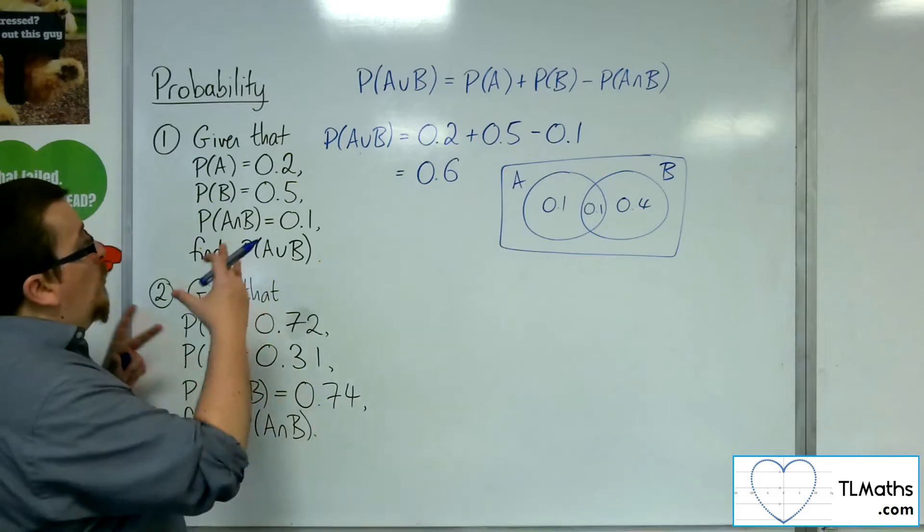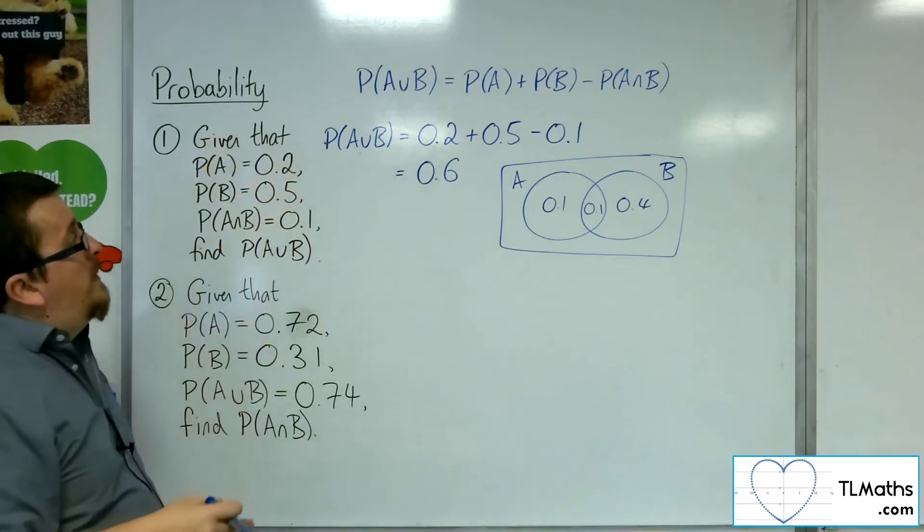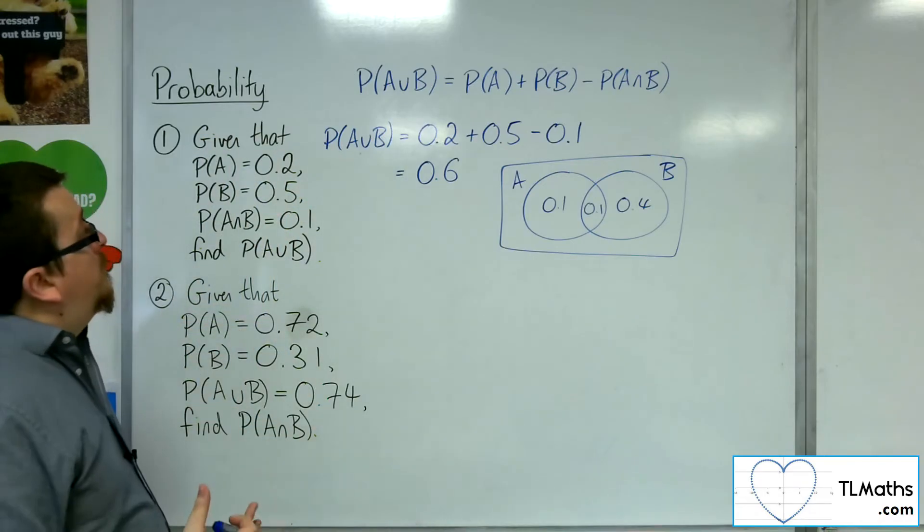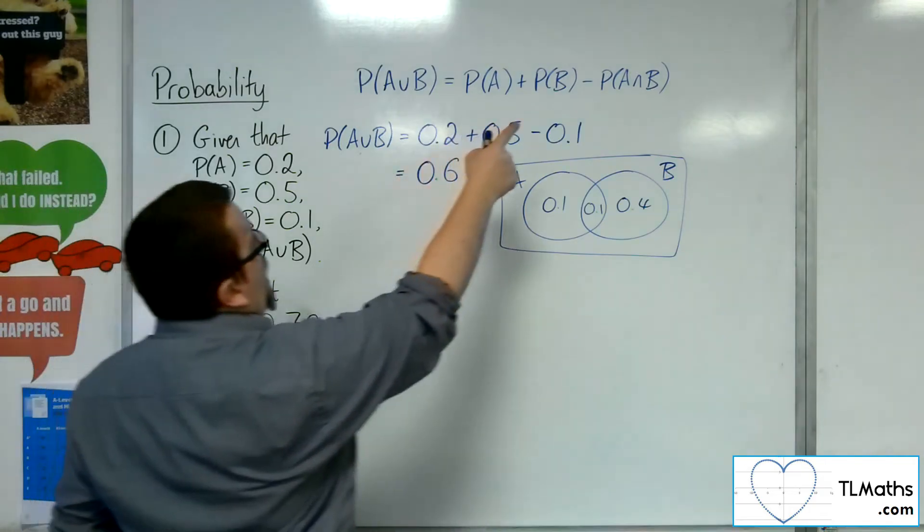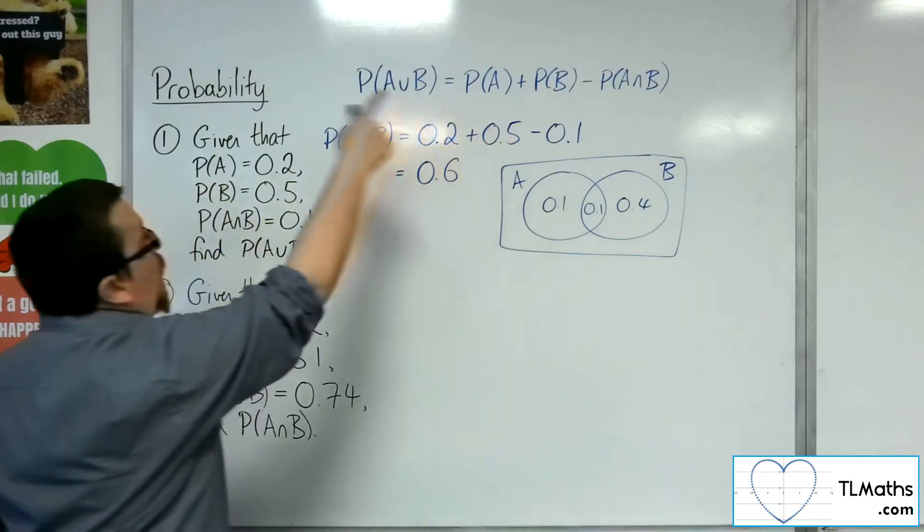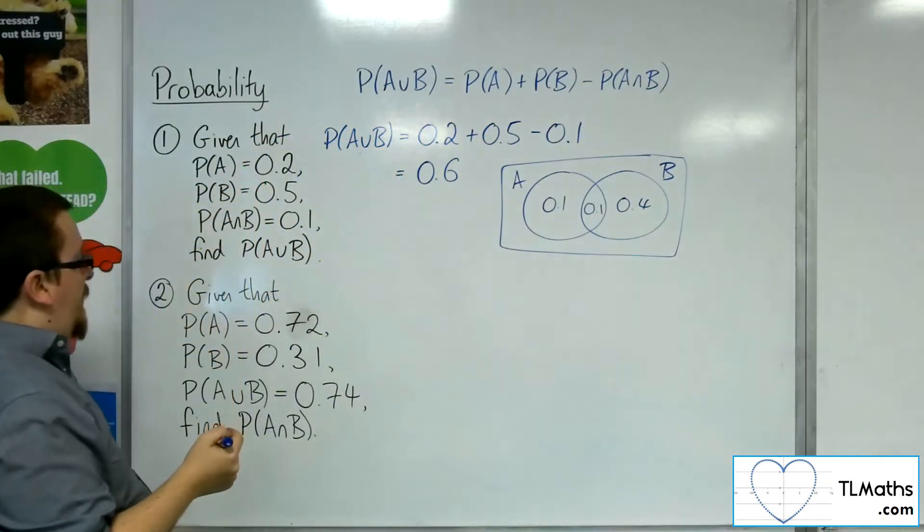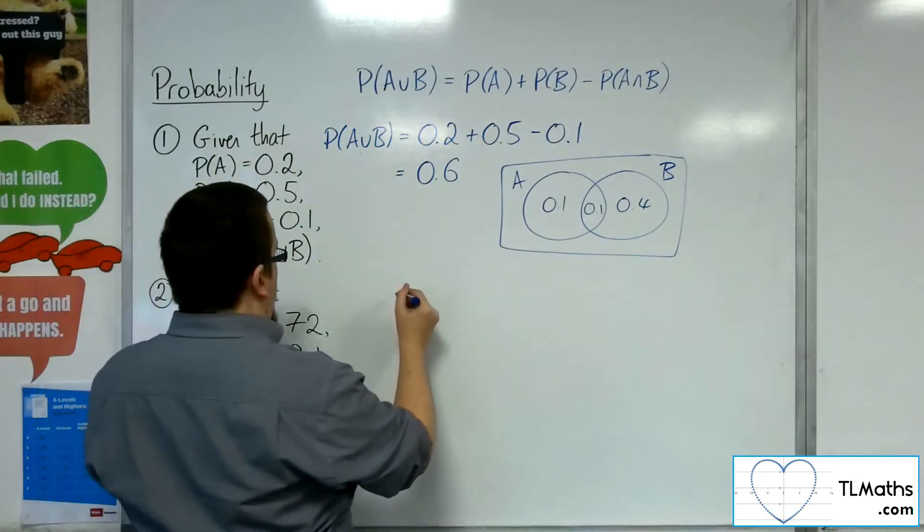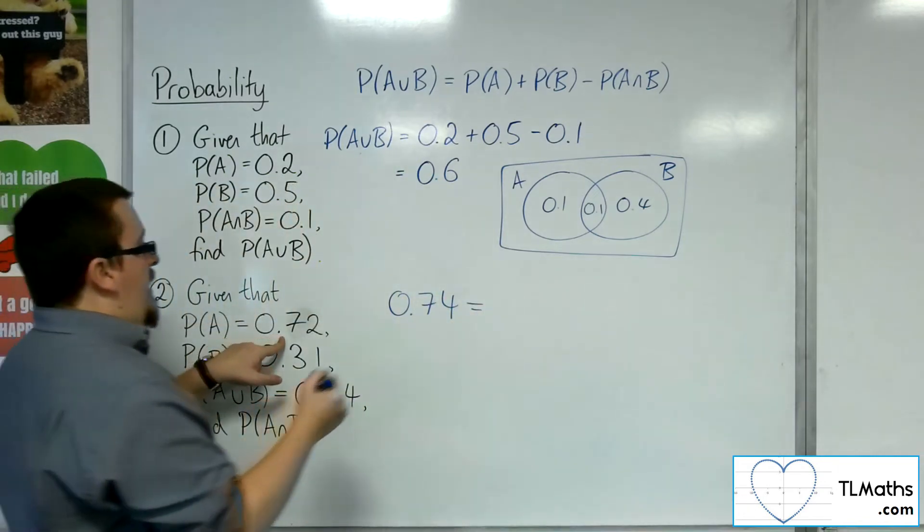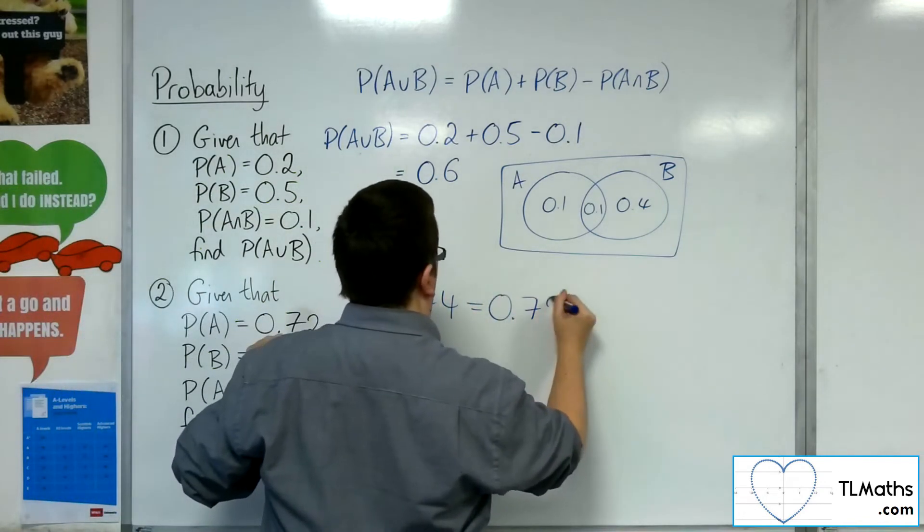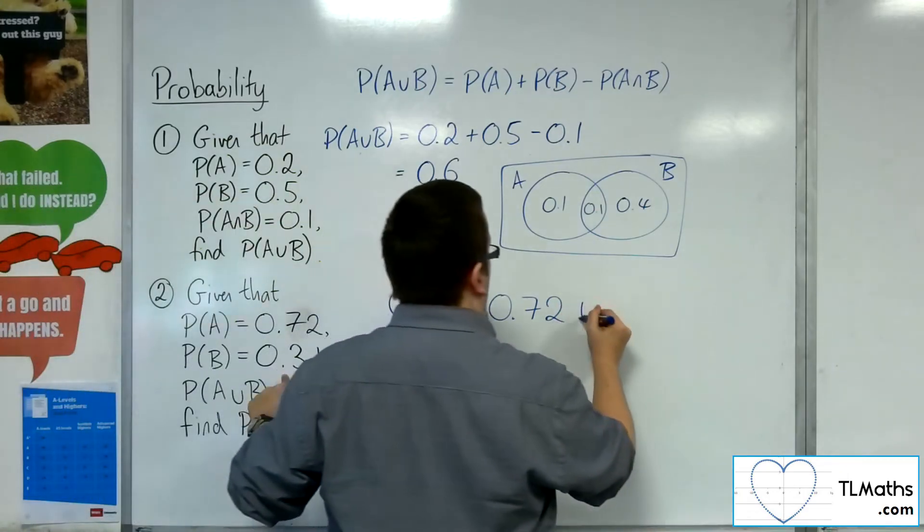So we can just go straight to the formula and then rearrange it. Because if I look at this formula, I've got three of the four pieces. I've got the union, which is 0.74. I've got the probability of A, 0.72. I've got the probability of B, 0.31.